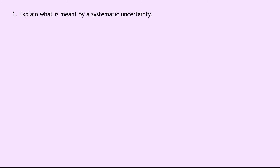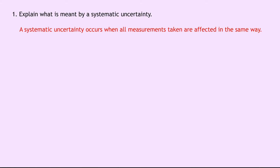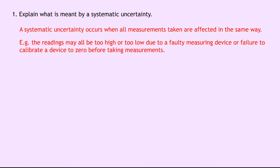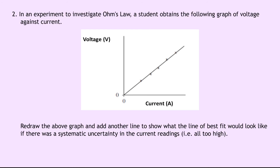Now two quick examples on systematic uncertainty. Question 1: explain what is meant by a systematic uncertainty. A systematic uncertainty occurs when all measurements taken are affected in the same way — for example, readings may all be too high or all too low due to a faulty measuring device or a failure to calibrate a device to zero before taking measurements. Question 2 involves an Ohm's law graph of voltage against current, which should be a straight line through the origin. We're asked to redraw it showing what the line of best fit would look like if there was a systematic uncertainty in the current readings — i.e., all too high. Since the current values are all offset, the line shifts to this side of the origin.